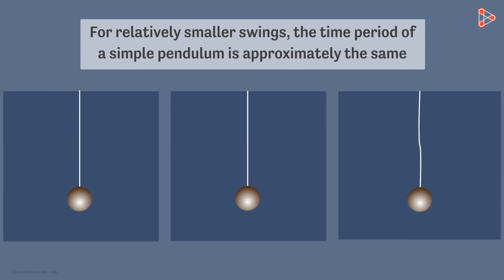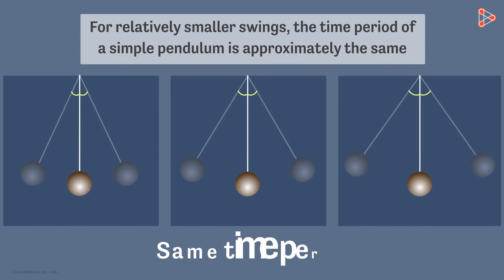Consider three cases, where in each case, a pendulum is displaced by a very small angle. Believe it or not, in all the cases, the time period of the pendulum will be the same. Yes, this is what this property tells us.